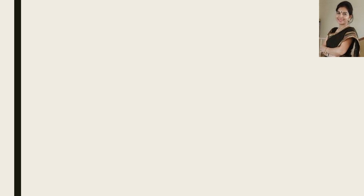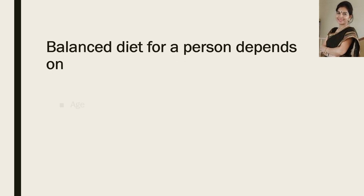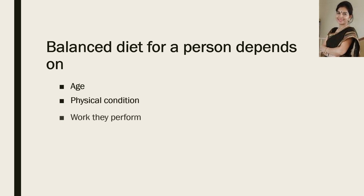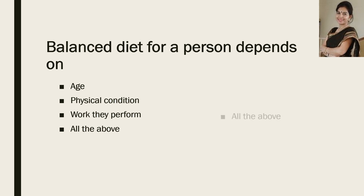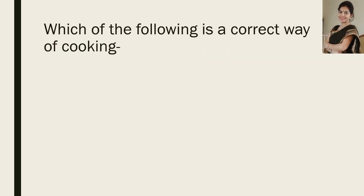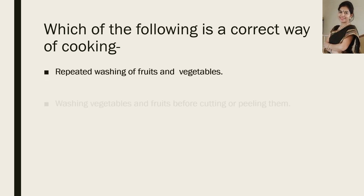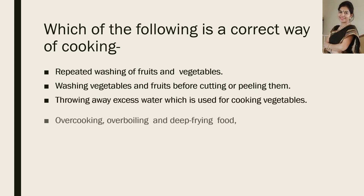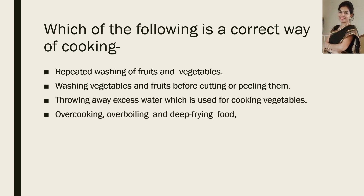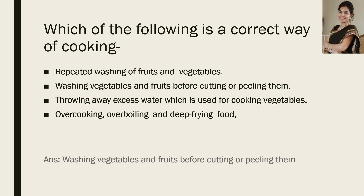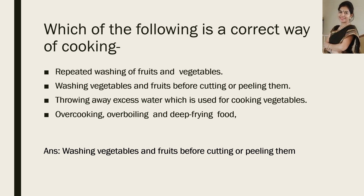Now, balanced diet for a person depends on: age, physical condition of that person, work they perform, or all of the above? And the correct answer is all of the above. Now, which of the following is the correct way of cooking? Read the statements carefully. And the correct answer is: washing vegetables and fruits before cutting or peeling them.